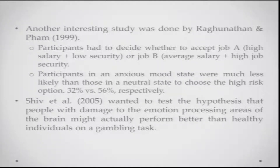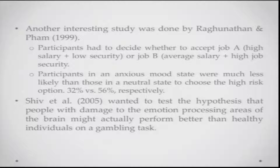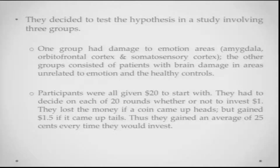Participants in an anxious mood state were much less likely to choose the high-risk Job A than those in a neutral mood state — only 32 percent of anxious participants chose Job A versus 56 percent of neutral mood participants. Shiv and colleagues in 2005 tested the hypothesis that people with damage to emotional processing areas of the brain — the amygdala, orbitofrontal cortex, and somatosensory cortex — might actually perform better than healthy controls on gambling tasks, because they would not be so worried about the future.